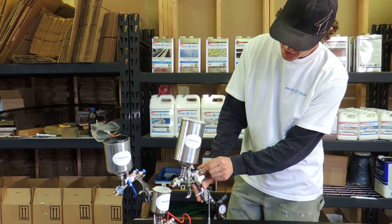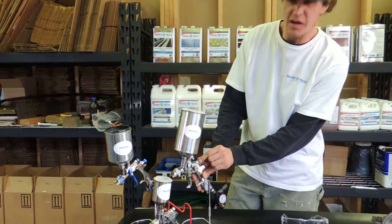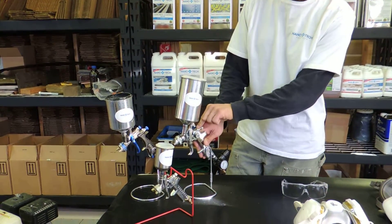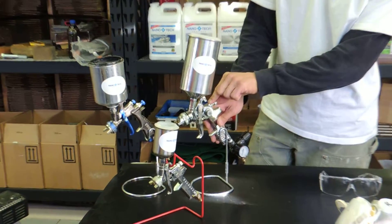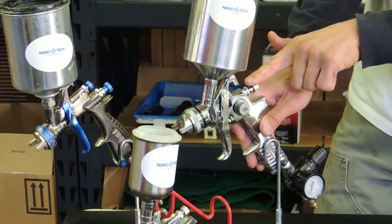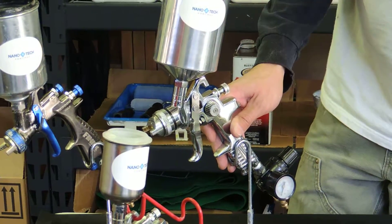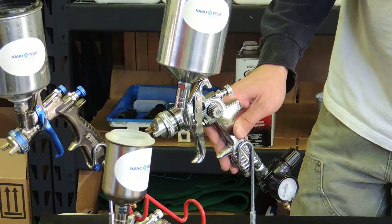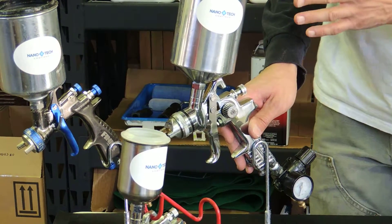This knob here is the fluid flow rate, so you can adjust the amount of product that you're spraying at any given time. You can decrease or increase the amount of fluid or product.